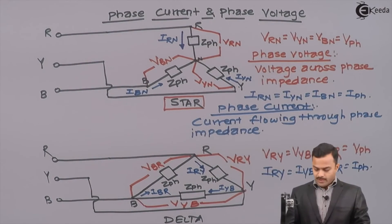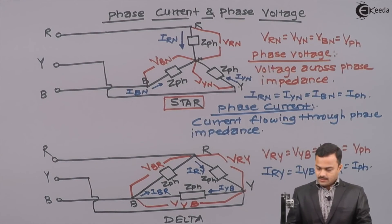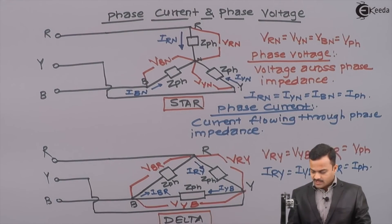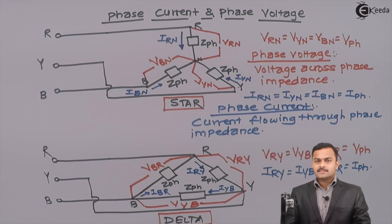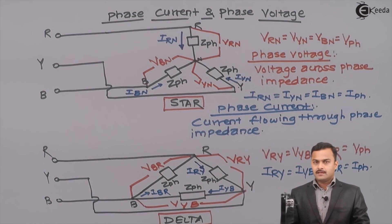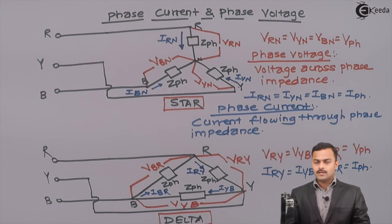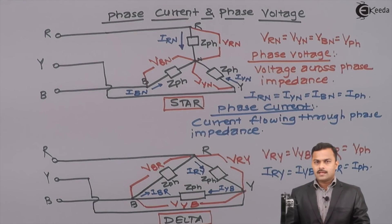It is very important to understand phase voltage and phase current in the case of both star and delta, as well as line voltage and line current, because in subsequent derivations we have to establish the relationship between line quantities and phase quantities for both star connected and delta connected loads.